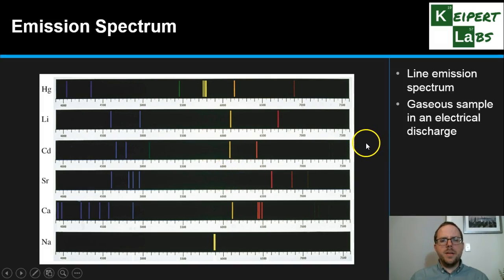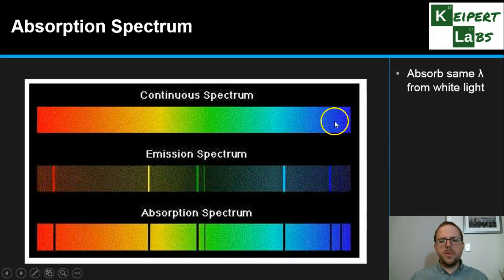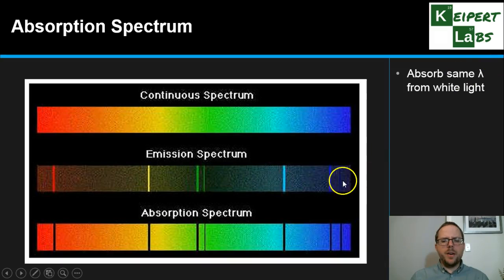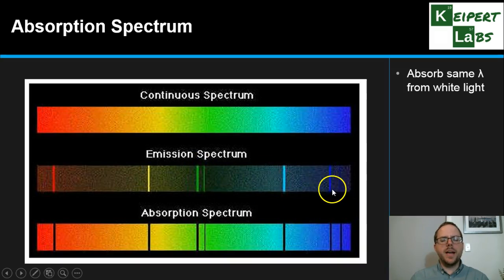We've already looked at the idea of atomic absorption spectroscopy — absorbing particular wavelengths. You can see how this is connected: when we excite atoms we get particular wavelengths being emitted, but atoms of that element will also absorb those same wavelengths from white light. In astronomy, for example, we can look at an absorption spectrum and identify what colours are being absorbed by atoms of hydrogen, helium, carbon, and oxygen — finding the gaps rather than the coloured emission lines. But here we're focusing on how the emission spectrum can help us in a forensic context.